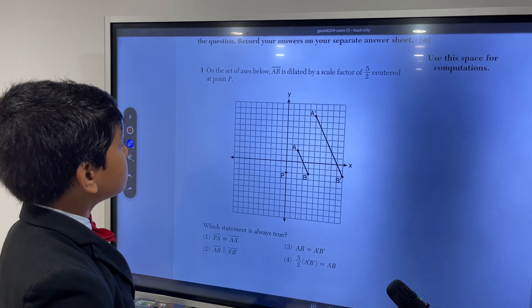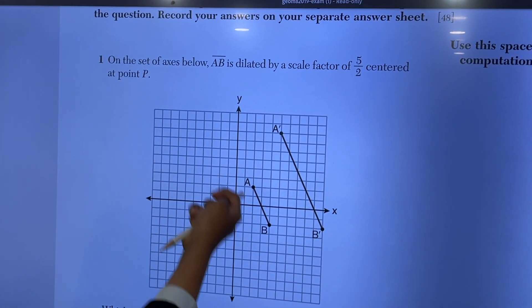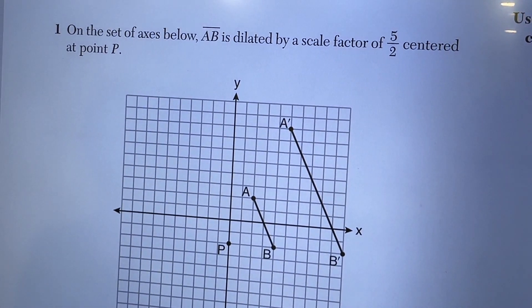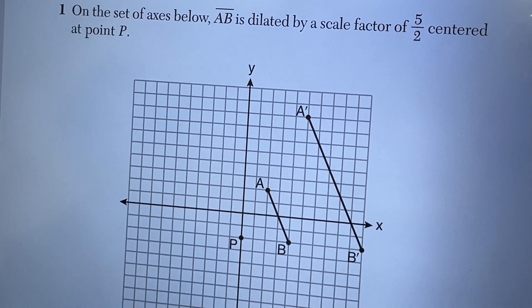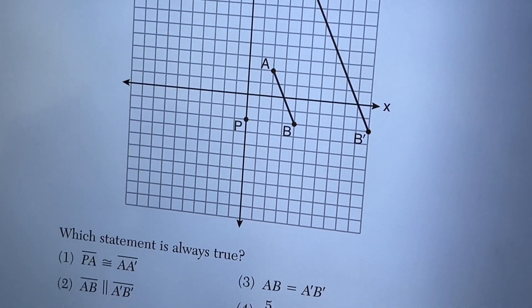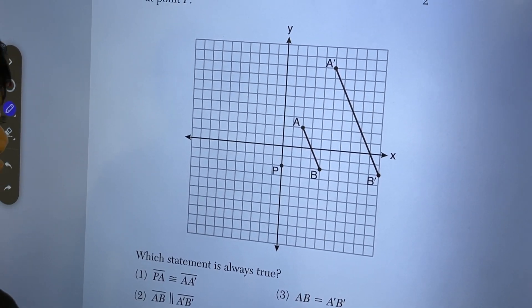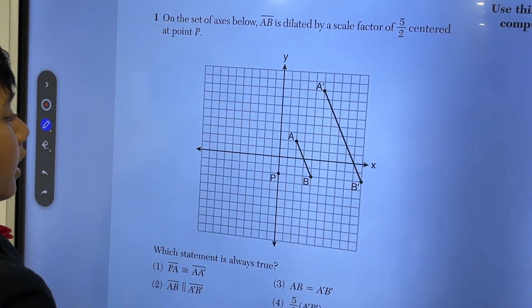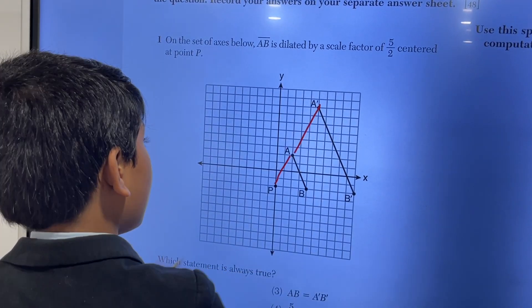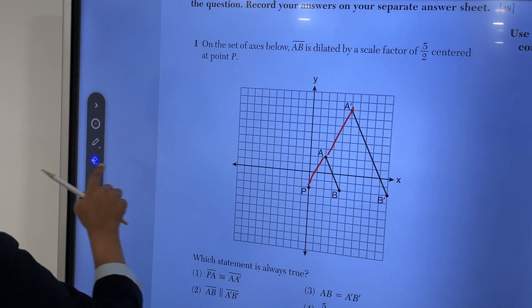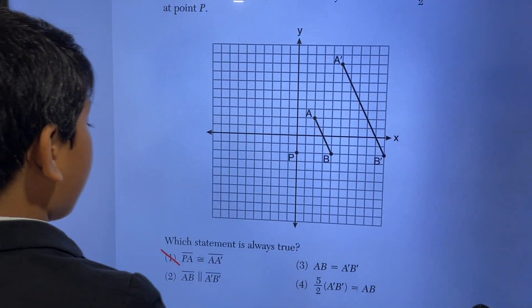Okay, number one. On set of axes below, line AB is dilated by a scale factor of 5.5 centered in point P. What statement is always true? Well, that's easy because PA is not congruent to AA prime. We can see it over here. AA prime is clearly bigger. So we can cross that one out.